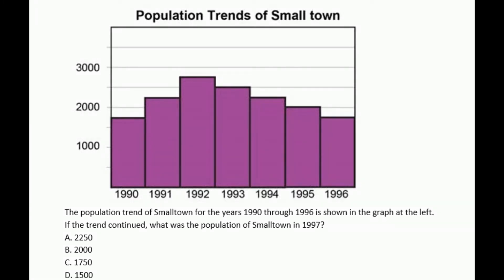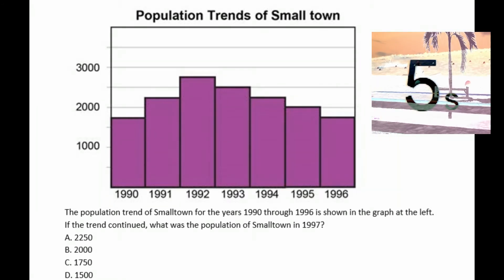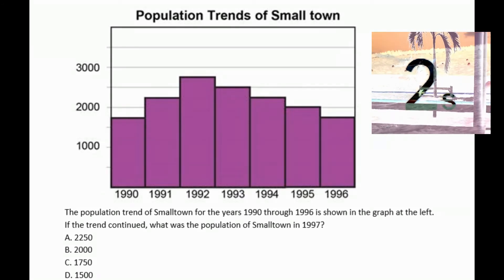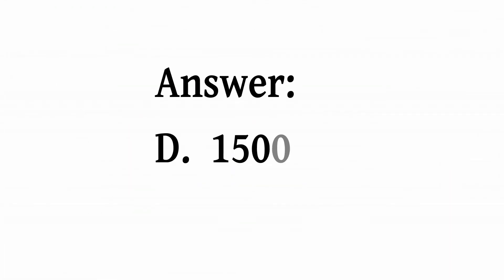Next: population trends of a small town — in thousands on the vertical axis and years on the horizontal axis. The population trends of the small town for the years 1990 through 1996 are shown in the graph. If the trend continued, what was the population of the small town in 1997? Is it A: 2,250, B: 2,000, C: 1,750, or D: 1,500? The answer is letter D, 1,500.